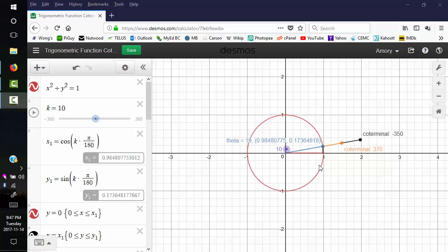Let's look at one more Desmos graph. This one shows coterminal angles. Here we have 10 degrees. We add 360, we get 370 degrees. We subtract 360, we get negative 350 degrees.